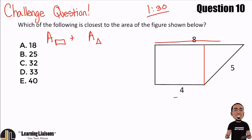Well, if this whole thing is eight and this part is four, then the remaining part must be four. All right. The remaining part is four.